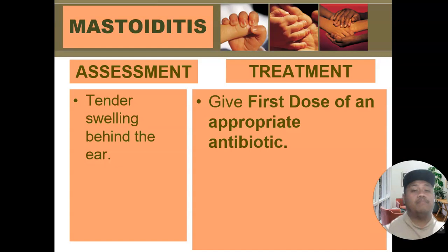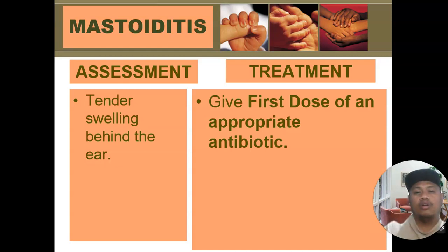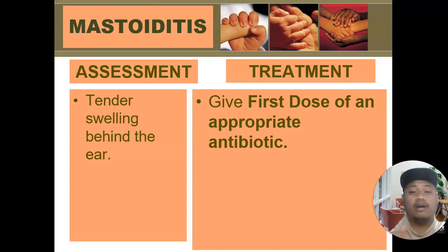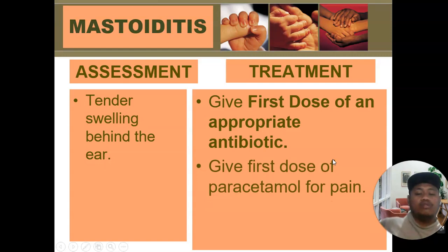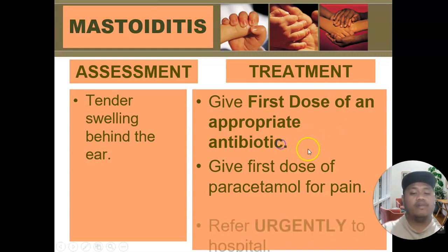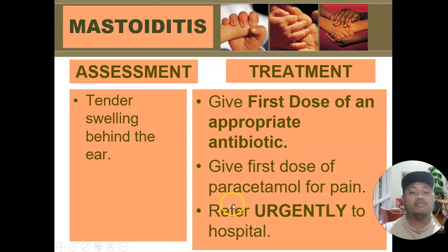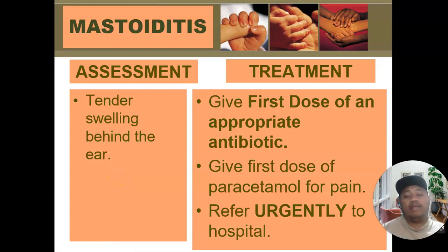The first-line combination drug for pink classification antibiotic management is ampicillin plus gentamicin. If ampicillin is unavailable, we can use penicillin plus gentamicin. Since there is also pain, we give the first dose of paracetamol for pain and to manage fever. After that, refer the child urgently to the nearest hospital for further management. That is mastoiditis — the only pink classification under ear problem.